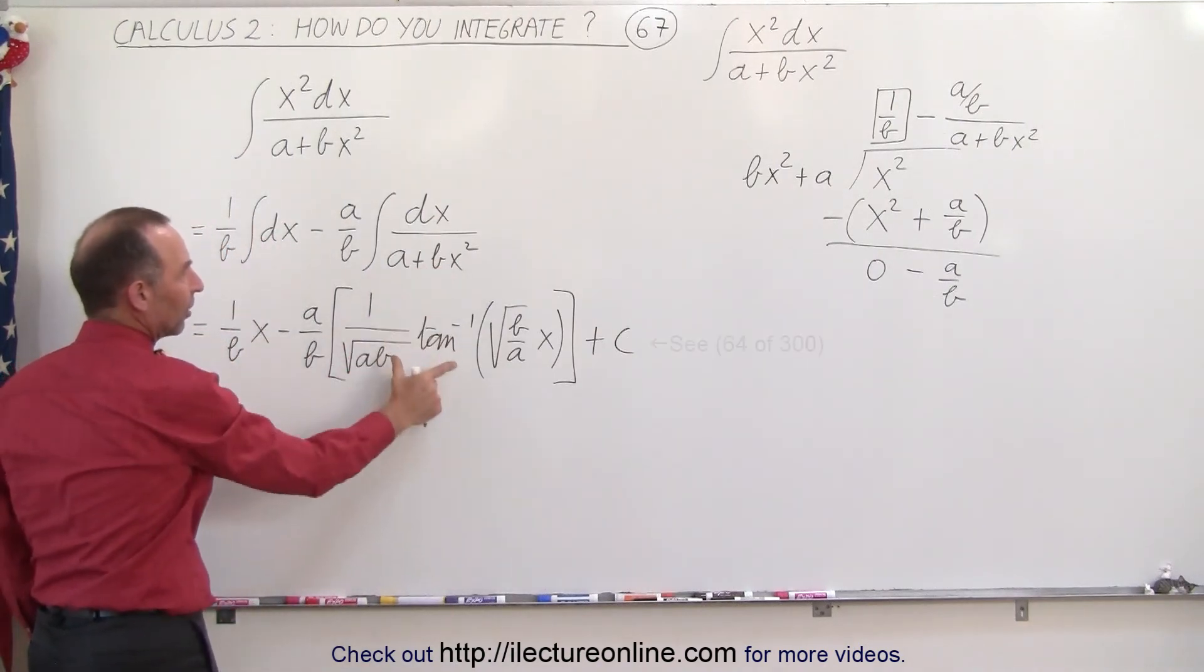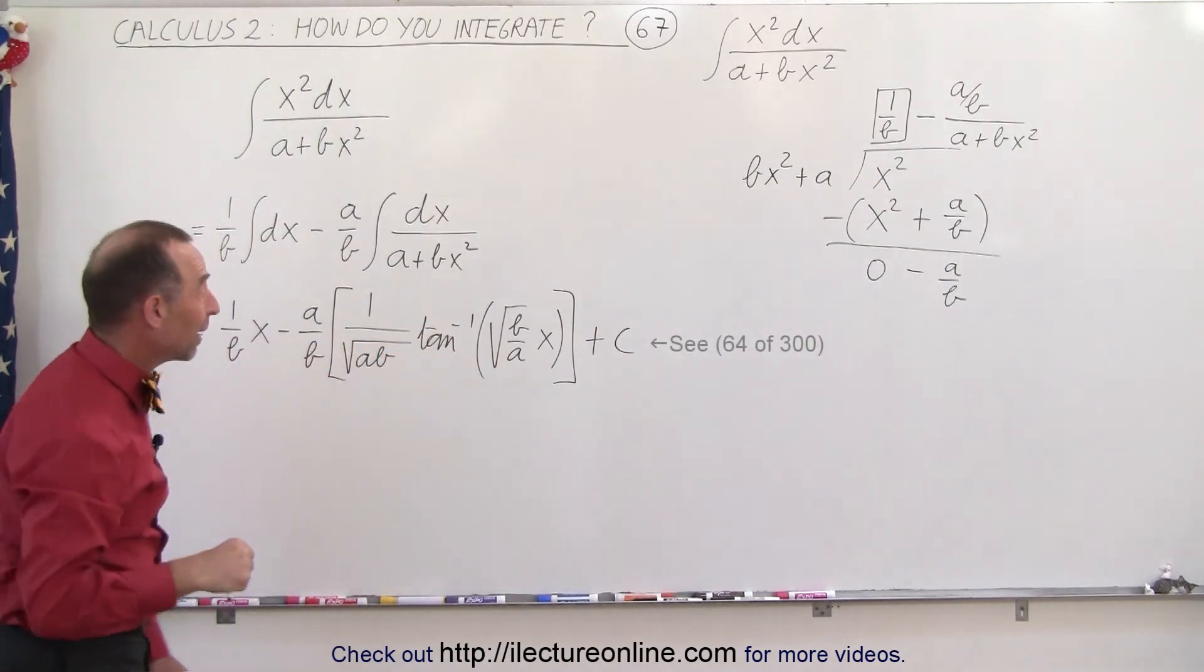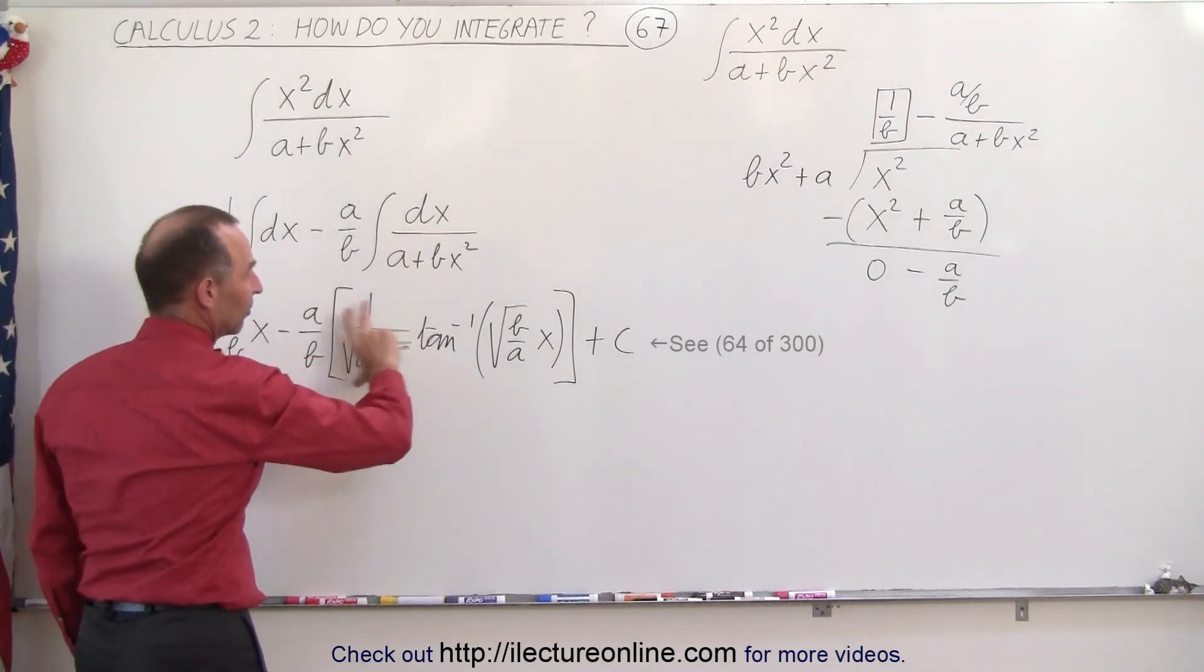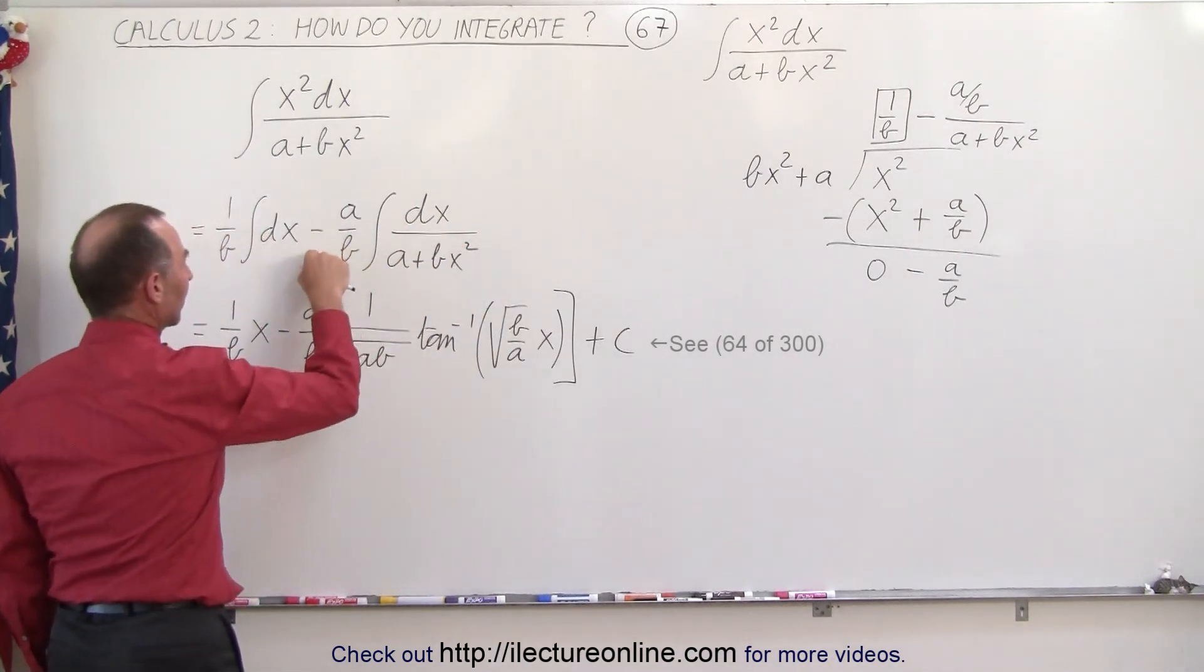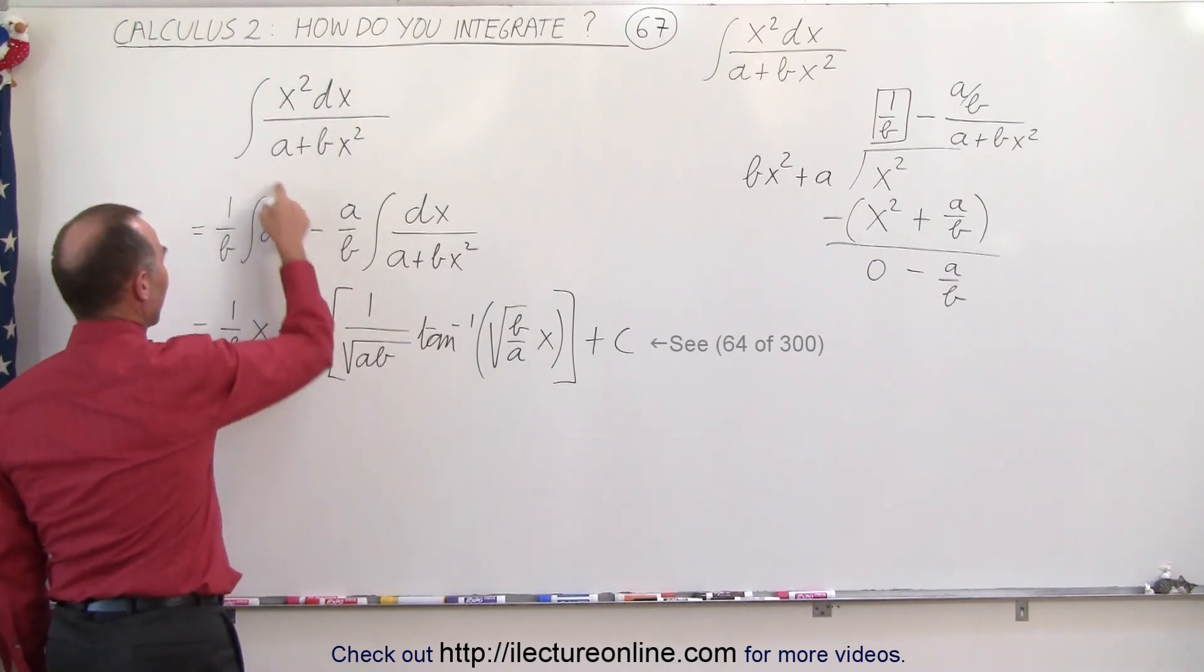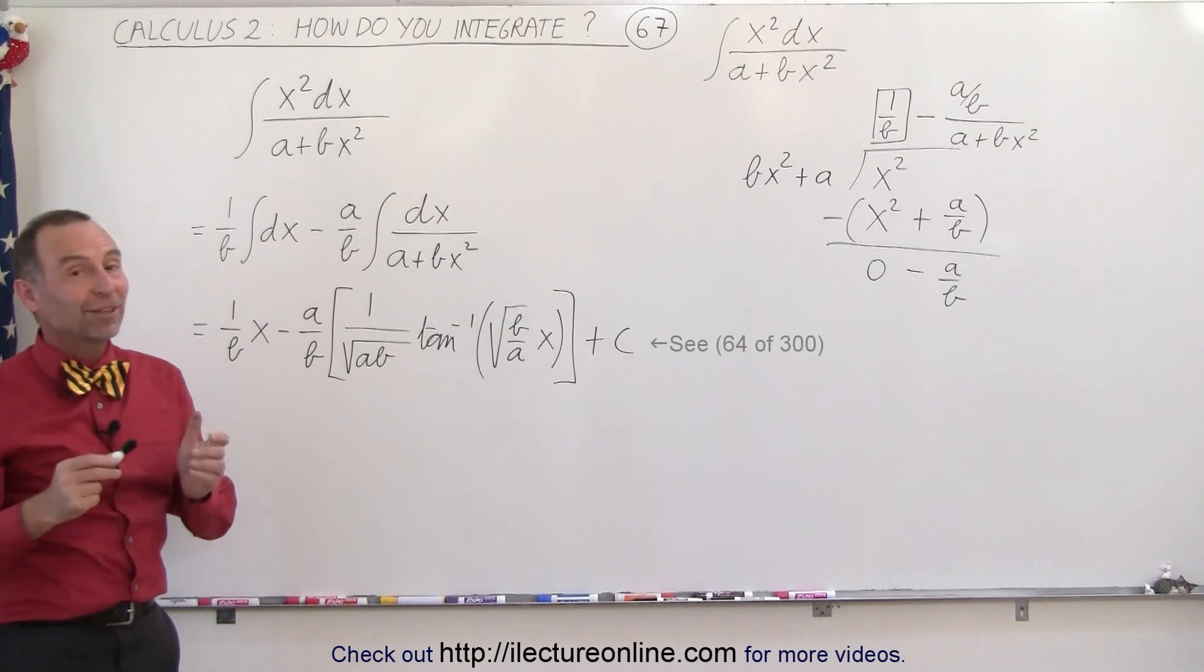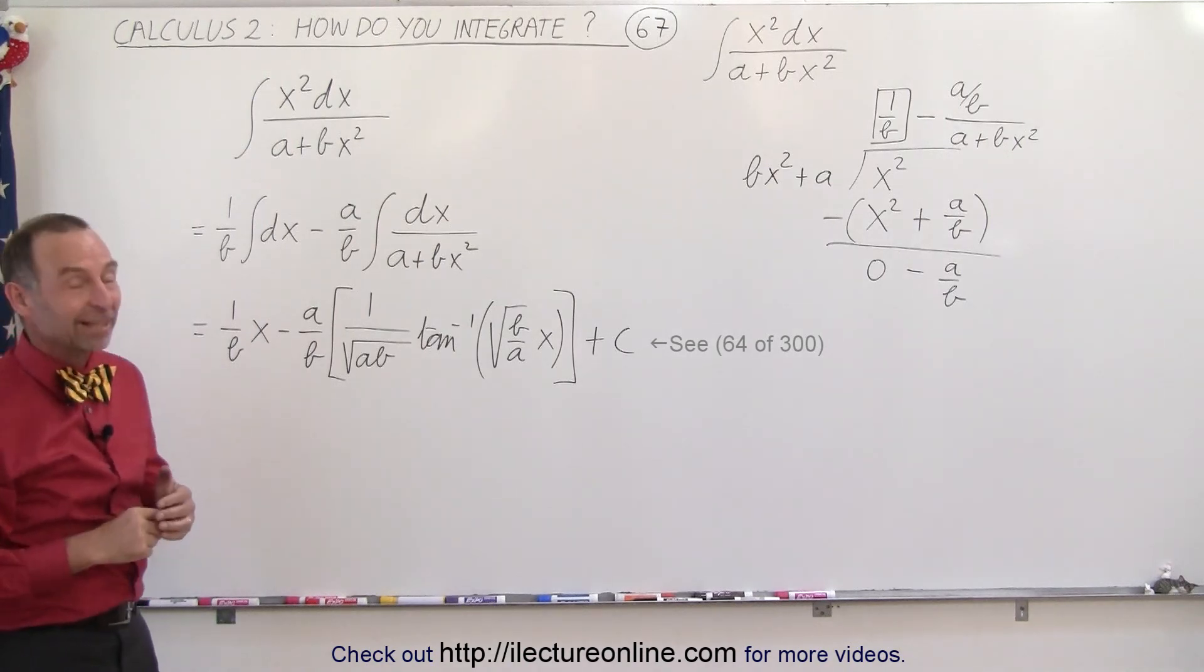If you don't remember how to do this, go back to the video we did about five videos ago. It shows you exactly how to take the integral of that. It's equal to this and then multiply that by minus a over b, and that becomes the result of this particular integral. And that's how it's done.